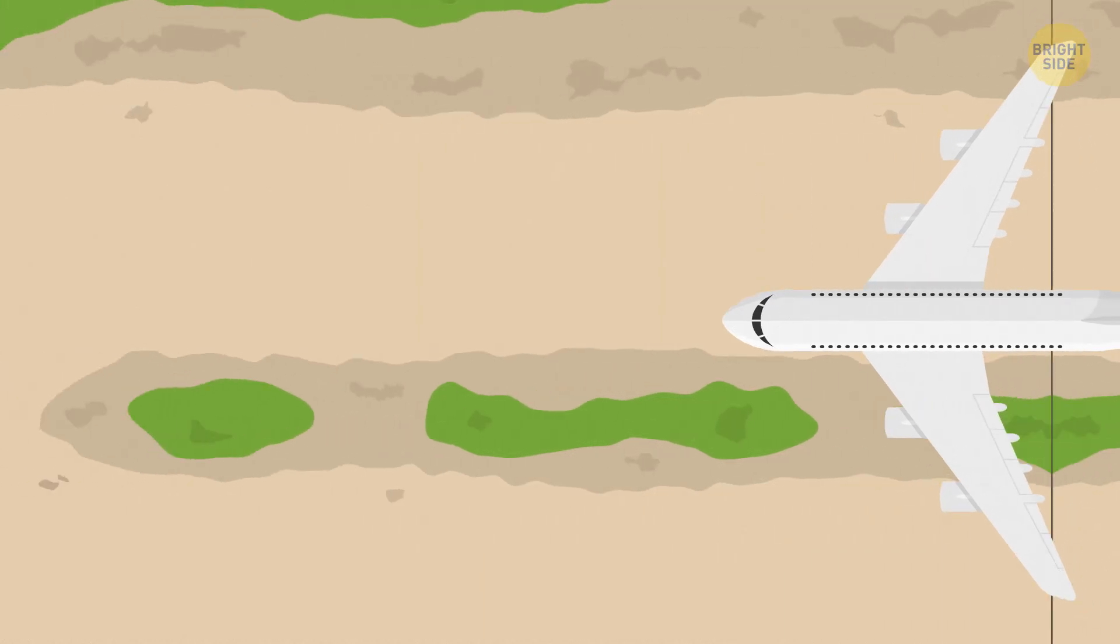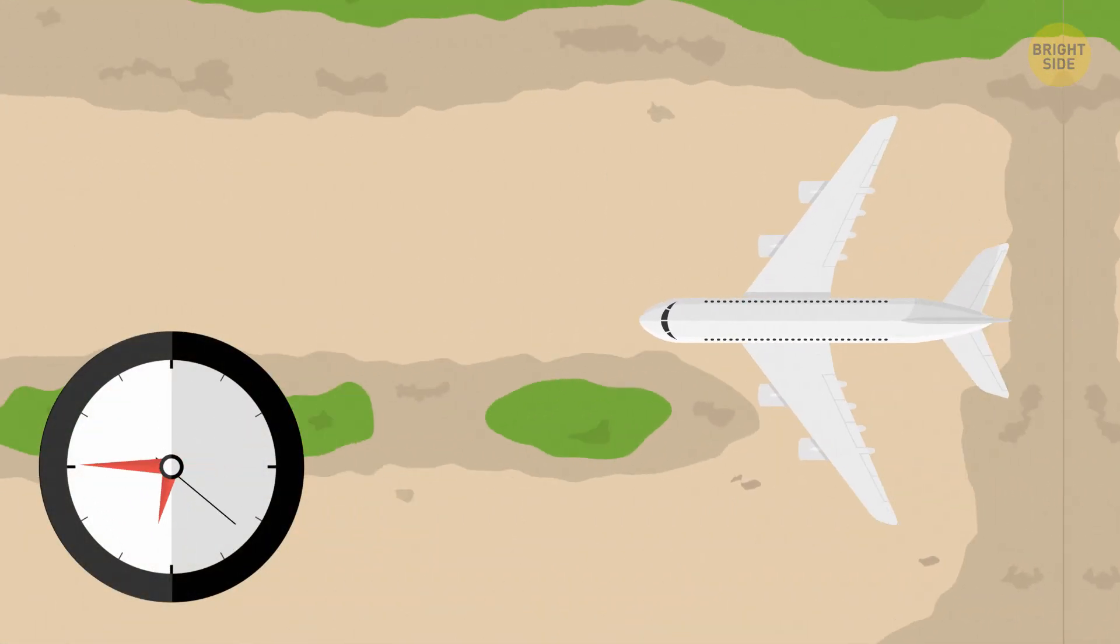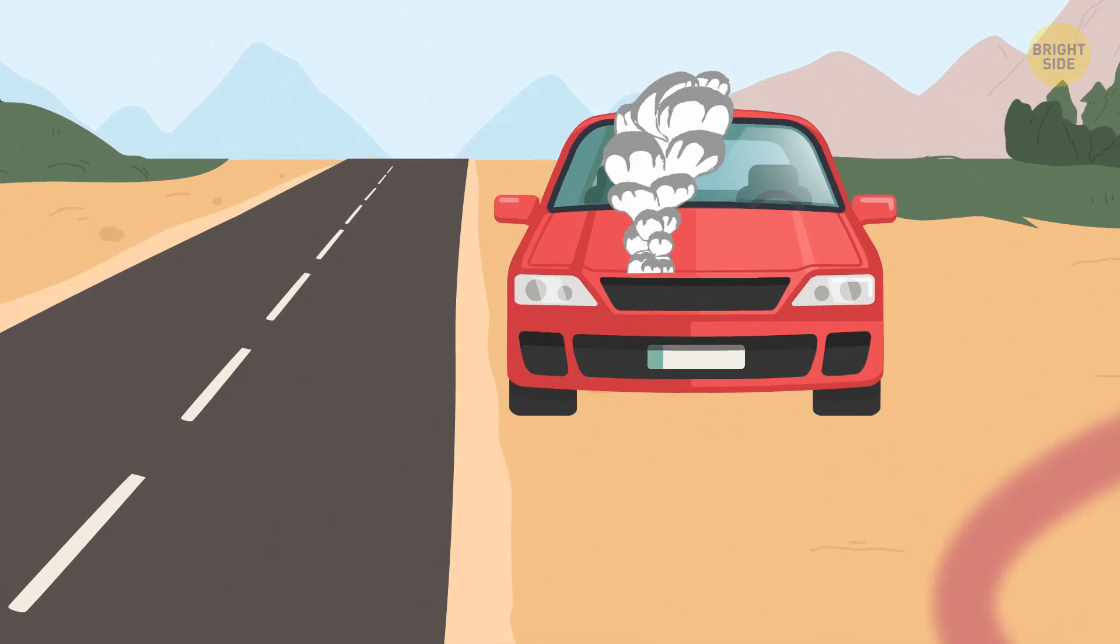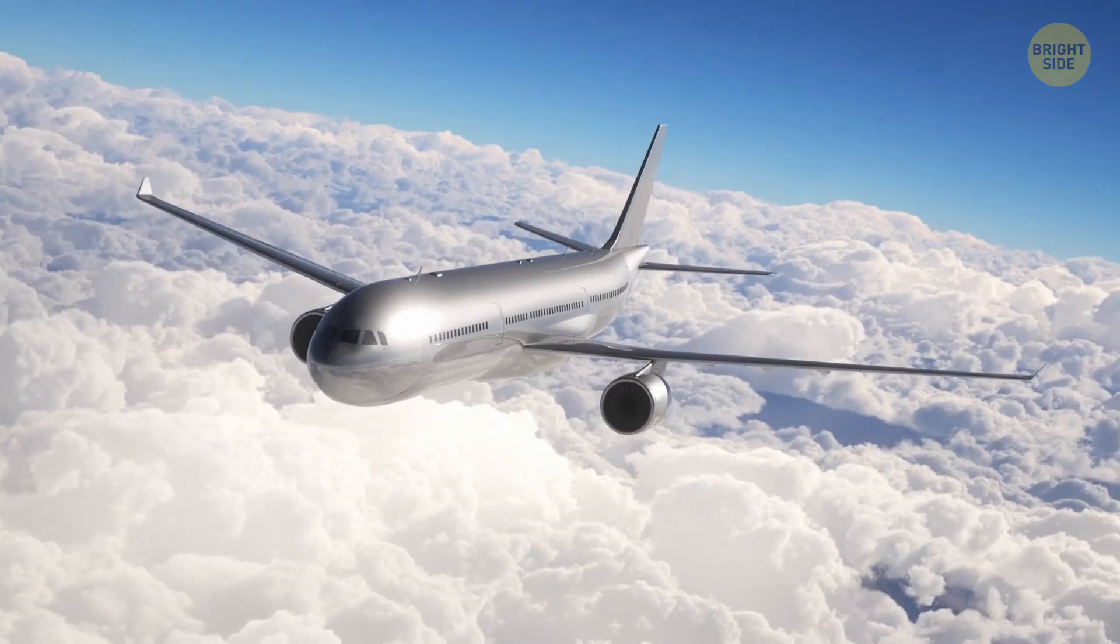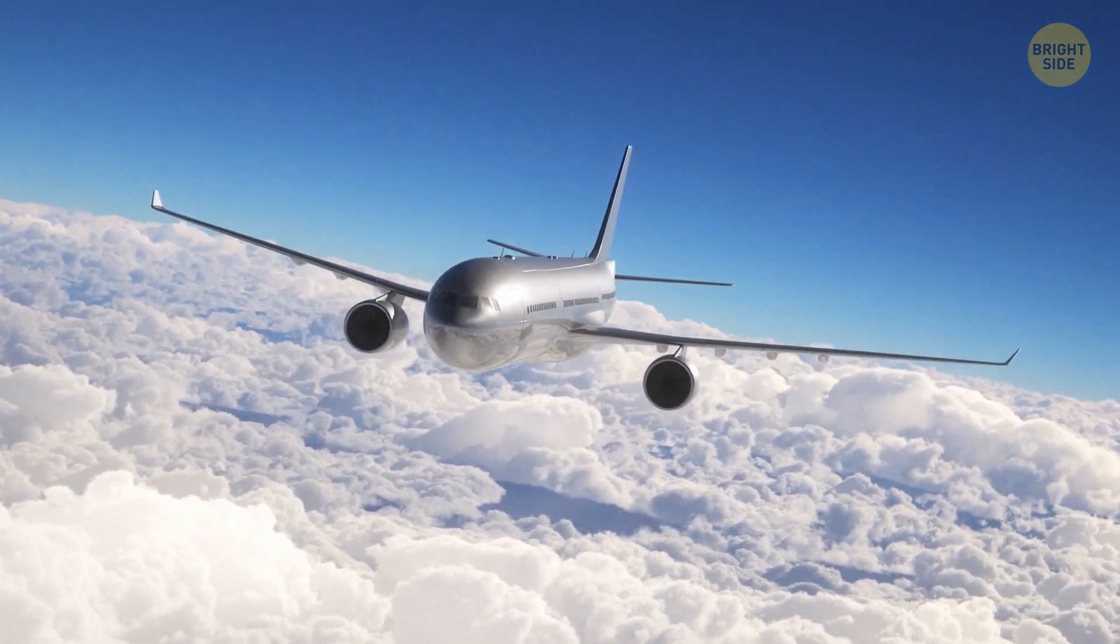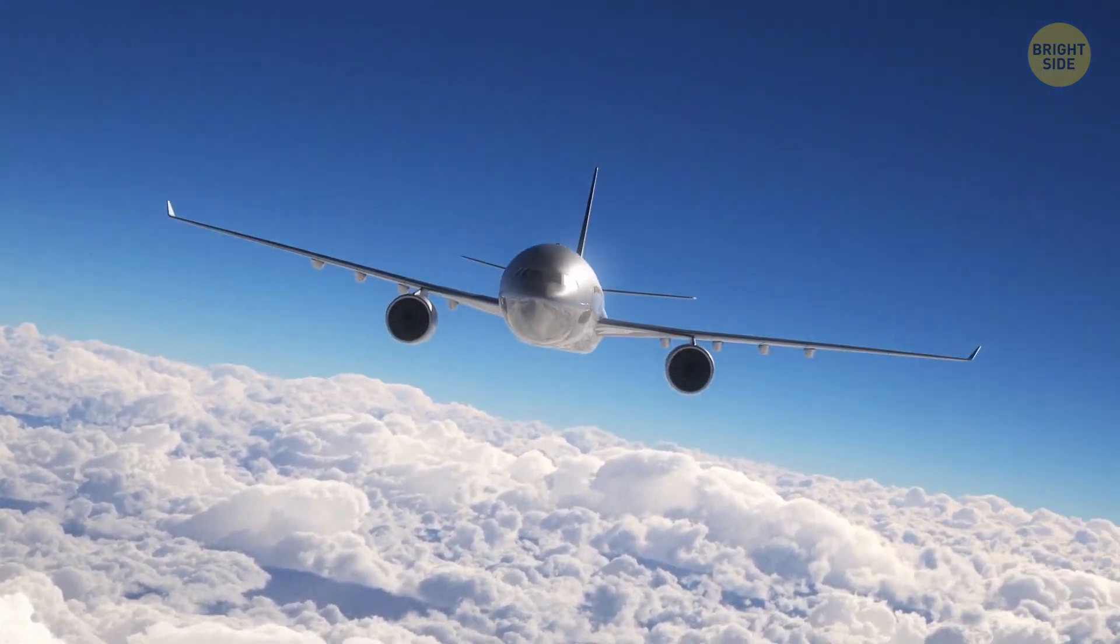In such a situation, the plane can glide for 50 minutes. Do you think you could drive a car if it had a broken engine? I doubt it. The air is like a road for the plane. If you imagine that the air is like a cake with many layers, these layers will have different density, mobility, and temperature.